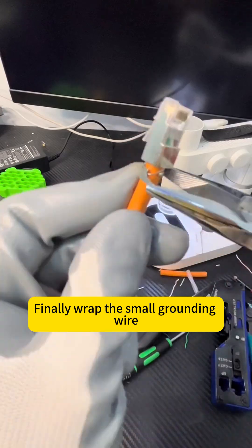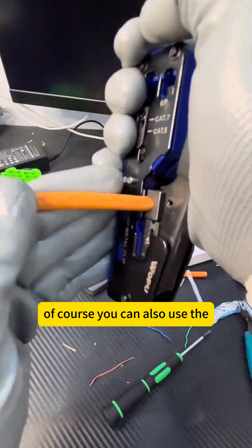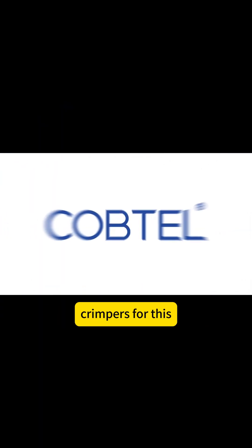Finally, wrap the small grounding wire around the cable and use pliers to tighten the strain relief clip, securing the ground wire. Of course, you can also use the dedicated strain relief tool that comes with some crimpers for this.